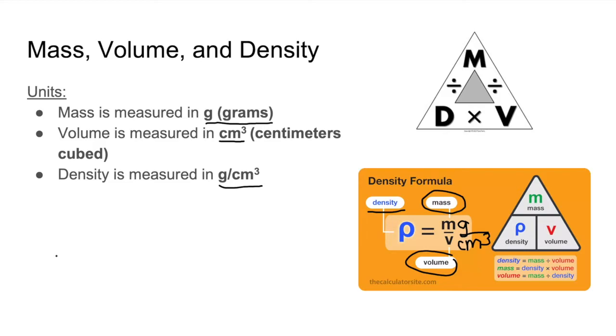So with this formula you not only can find density, but you can also figure out the mass and volume. As an example, say we have the density and the volume of an egg.